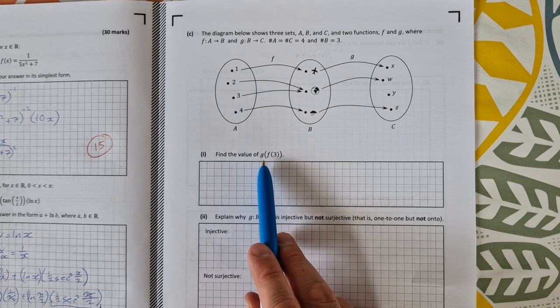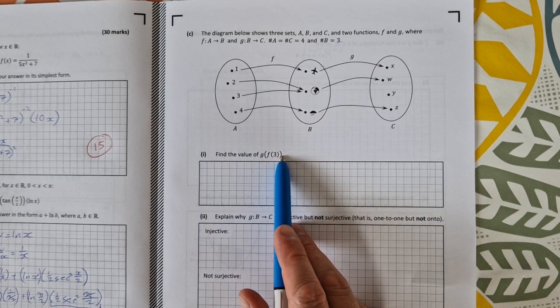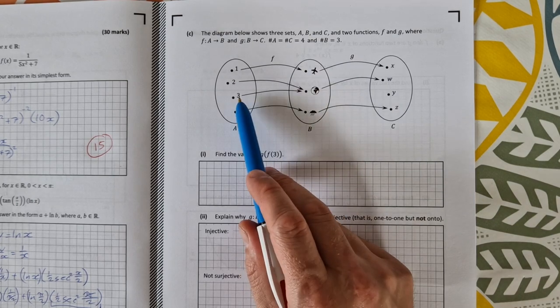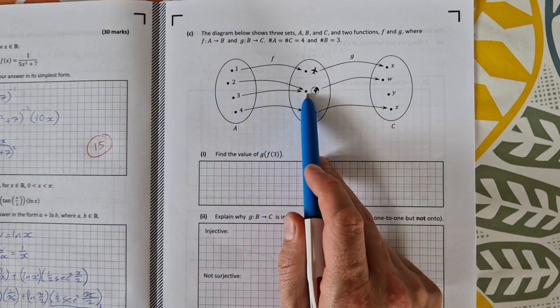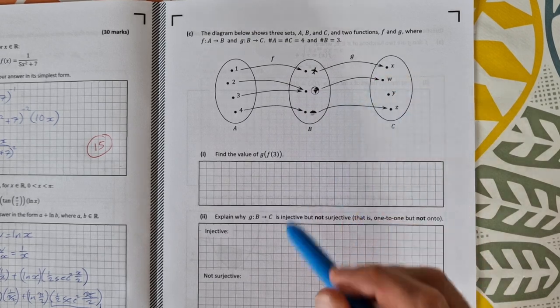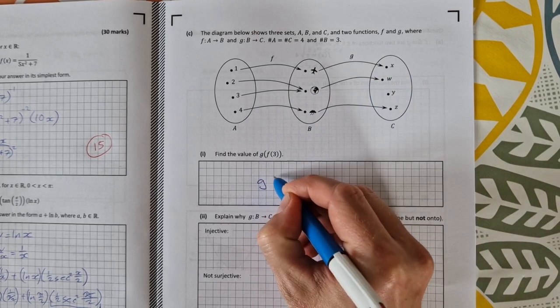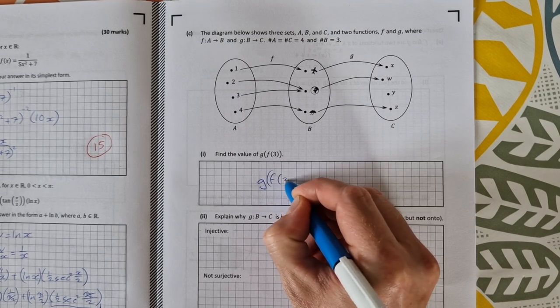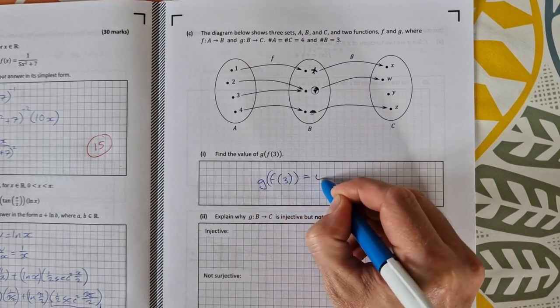Find the value of g after f of 3. So you just need to follow it. So if you do the f of 3 you end up with the planet and then if you do the g you end up with w. So that's the answer. g of f of 3 equals w.